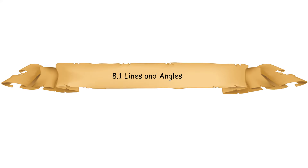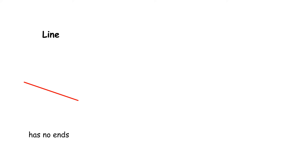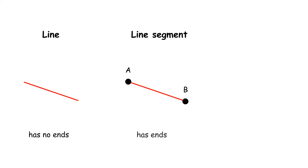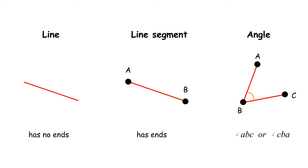8.1 Lines and Angles. A line has no ends. A line segment has ends and is denoted using capital letters at both ends. An angle is denoted using the symbol with capital letters at the vertex and at the ends of the two arms of the angle.